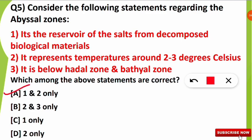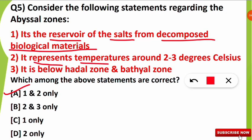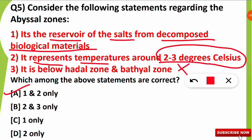Statements one and two are correct because: first, the abyssal zone is a reservoir of salts from decomposed biological materials; second, it represents a temperature of around two to three degrees Celsius, making it a very cold region. The third statement — that it is below the hadal zone — is incorrect. So only statements one and two are correct.